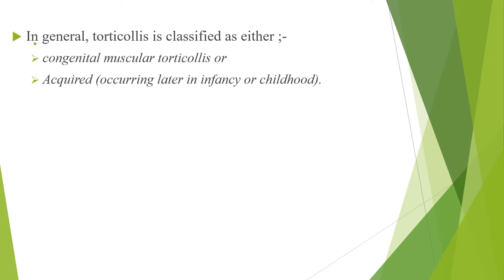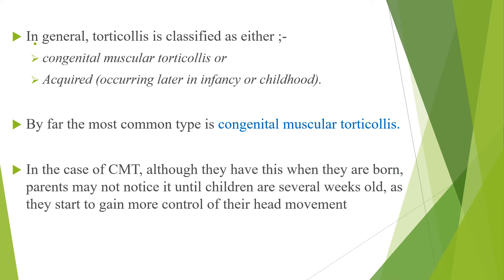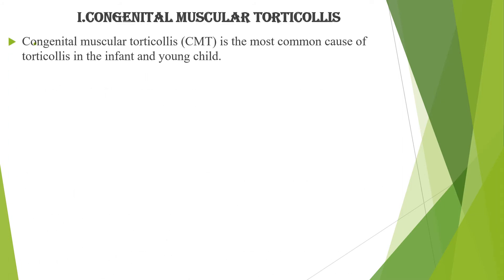In general, torticollis is classified as either congenital muscular torticollis or acquired, which occurs during later infancy or childhood. By far the most common type is congenital muscular torticollis. In the case of congenital muscular torticollis, although they have this condition when they are born, parents might not notice it until children are several weeks old, as they start to gain more control of their head movement.